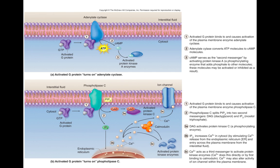With these receptor systems, you have different types of messengers. You have your first messenger, which is the neurotransmitter itself — the messenger from your presynaptic neuron. You also have second messengers. In the adenylate cyclase system, your second messenger is cyclic AMP, which carries that message from your neurotransmitter inside the cell, because the neurotransmitter doesn't cross the membrane — it just binds to the receptor on the outside. In the phospholipase C system, DAG and IP3 are your second messengers, and calcium is actually going to be a third messenger.